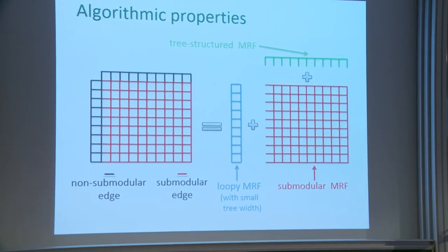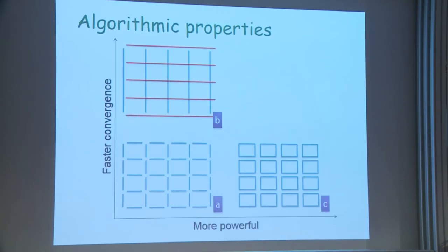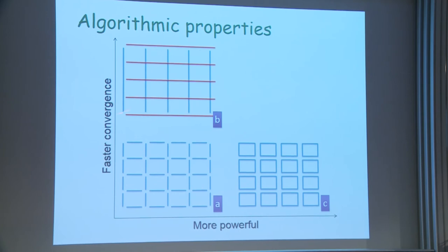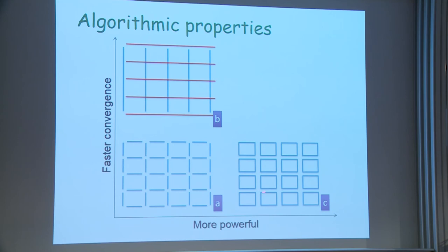The way decomposition is performed affects both convergence rate and the tightness of relaxation. You can think of ways to decompose your problem to increase convergence rate or improve relaxation quality — the decomposition strategy directly impacts these properties.